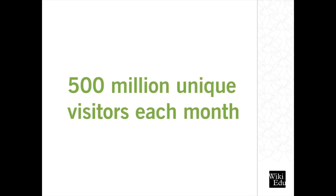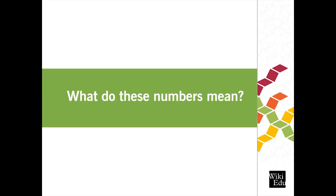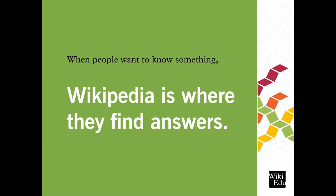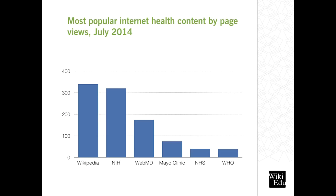Who are these readers? It's 500 million unique people every month from around the world. When people are looking for information, they go to Wikipedia. This chart uses data from Dr. James Heilman to show the number of page views for health-related content on various websites. As you can see, Wikipedia is the most accessed source for medical information — more people are visiting it every month than the NIH, than WebMD, and so on.